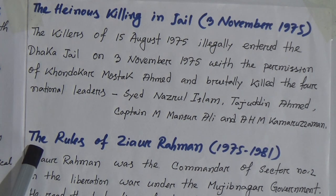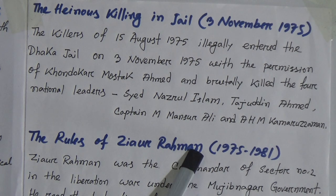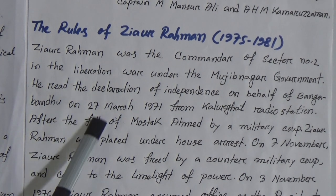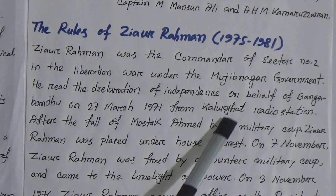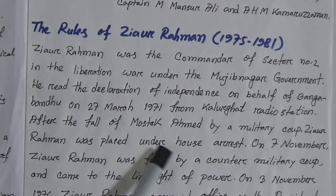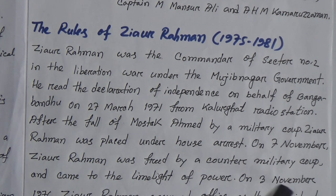There were two military rules in our country from 1975 to 1990. The first was the rule of Ziaur Rahman from 1975 to 1981. Ziaur Rahman was the commander of Sector No. 2 in the liberation war under the Mujibnagar government. He read the declaration of independence on behalf of Bangabandhu Sheikh Mujibur Rahman on 27th March 1971 from Kalurghat radio station. After the fall of the Mujibnagar government by a military coup, Ziaur Rahman was placed under house arrest. On 7th November, Ziaur Rahman was freed by a counter-military coup and came to the limelight of power, assuming the office of President on 21st April 1977.